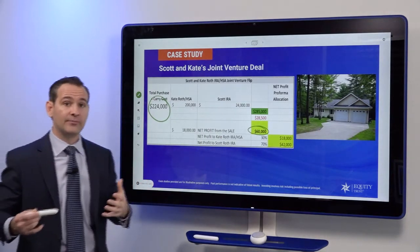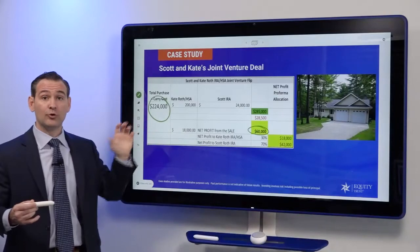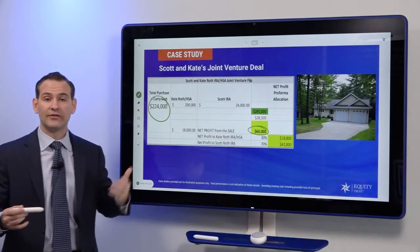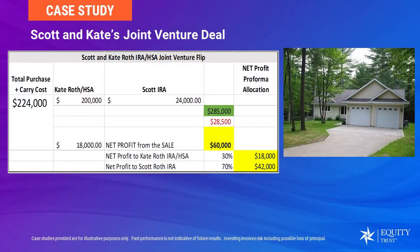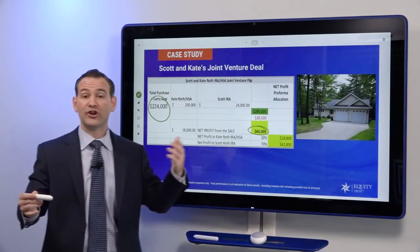Then comes in Kate, who is Scott's real estate investor partner. Kate and Scott are not considered disqualified persons to one another — they're not of lineal ascent or descent, or spouses of one another. There are no disqualified persons involved. Therefore, they can split the profits in any way that they choose to negotiate.